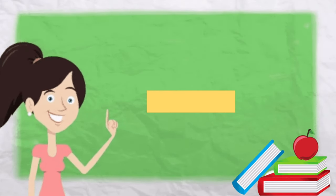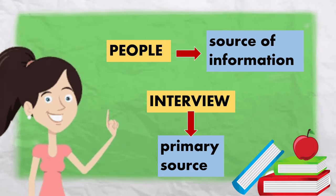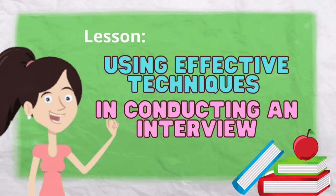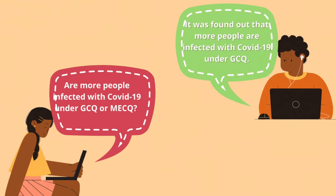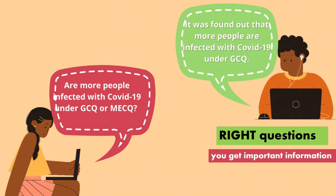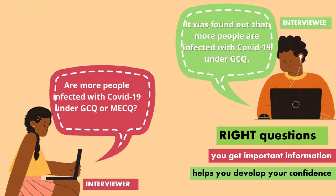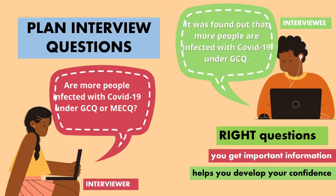In the second quarter, you learned that people are sources of information and that an interview as a primary source is the way to gather information. In this lesson, you will learn the effective ways in conducting an interview. Now, observe the following virtual interview. During an interview, whether it is face-to-face or virtual, asking the right questions helps you get important information from the interviewee. It also helps you develop your confidence. To accomplish this, you must plan the interview questions carefully.